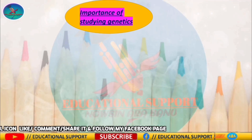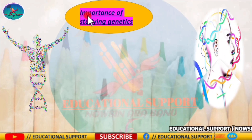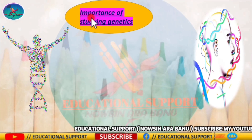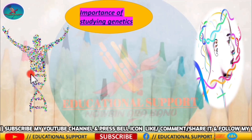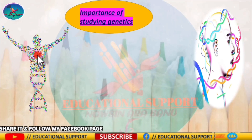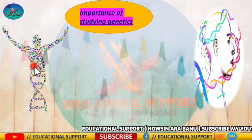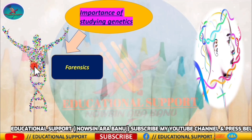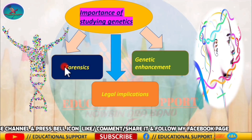Why is studying genetics important? In the future, doctors and scientists hope to use genetic information to diagnose, treat, prevent, and cure many diseases. Genes tell how your body is made — instructing all the proteins needed to survive and grow, how your body works, and what is happening when it does not work properly. This will eventually lead to more effective medicines and treatments, as well as forensic and legal implications and genetic enhancement.